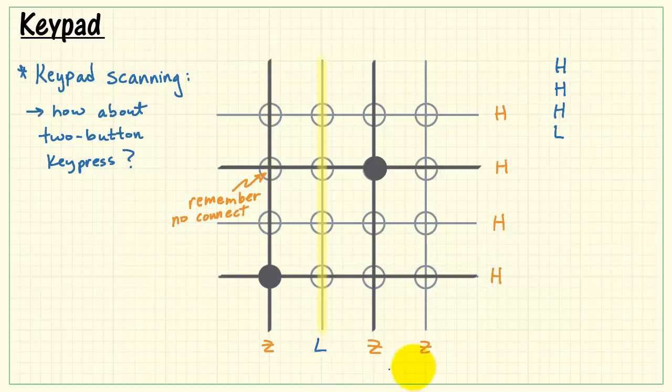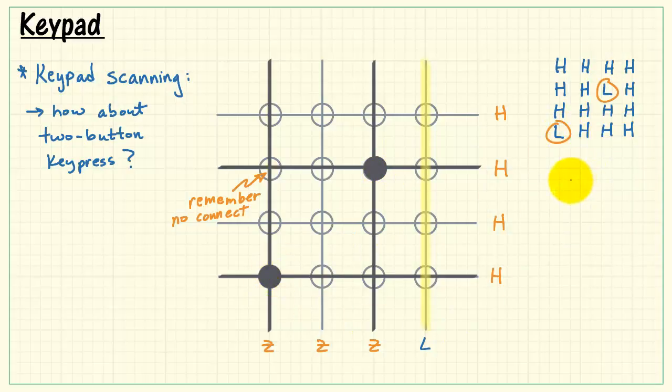Let's move to the second column. No switches are closed. We observe that all the lines are pulled high. Let's move on to the third column. Pull this line low, and we detect this pattern. And finally, we move to the fourth column. We see that all the lines are being pulled high. You look at your results. I see a low and a low, and sure enough, those correspond to the two locations of the two buttons that are being pressed. This scanning method works for all possible two-button key presses.